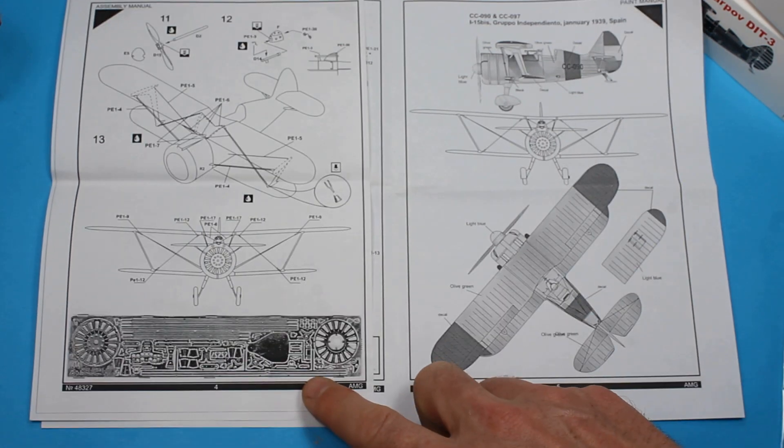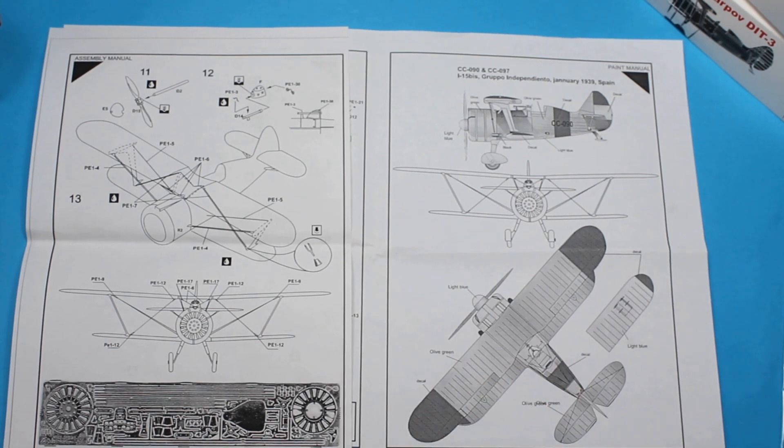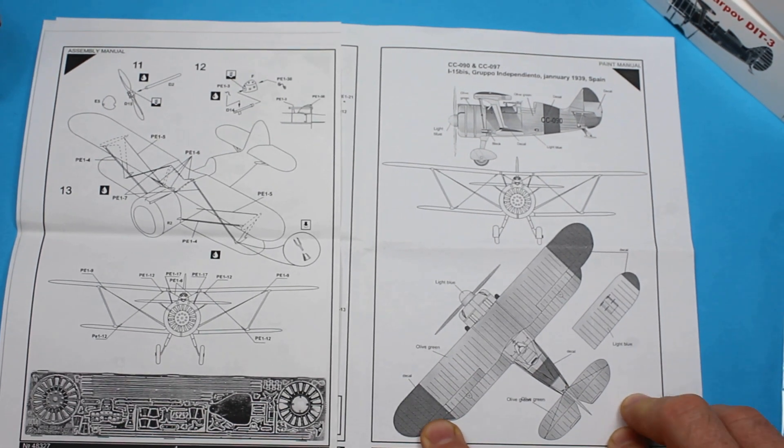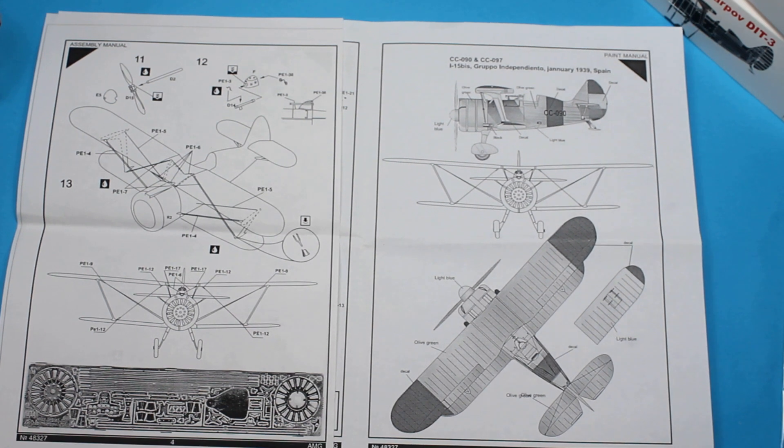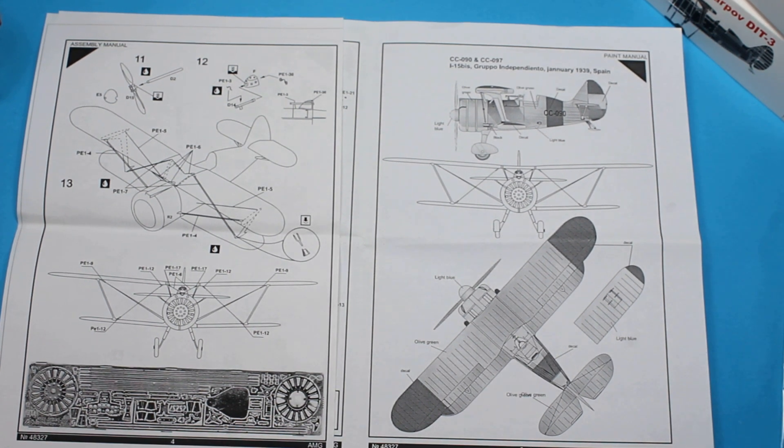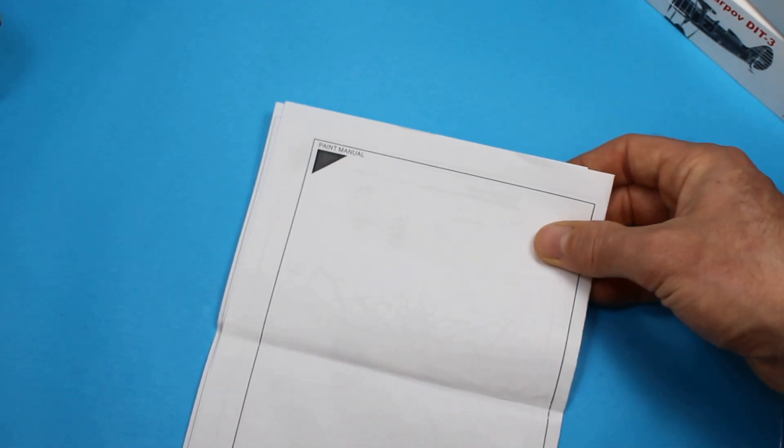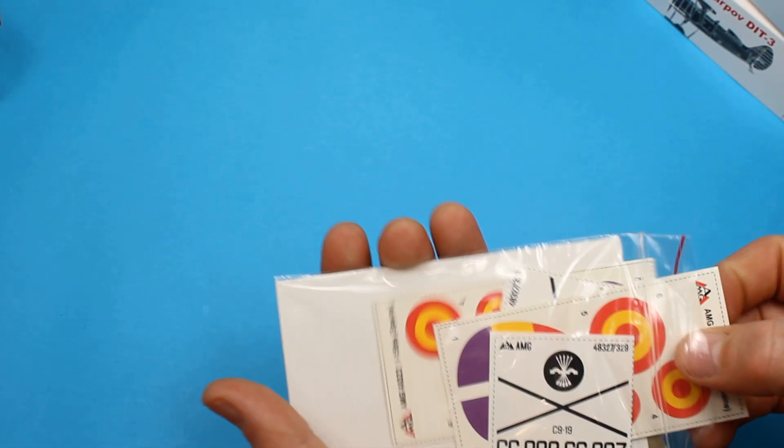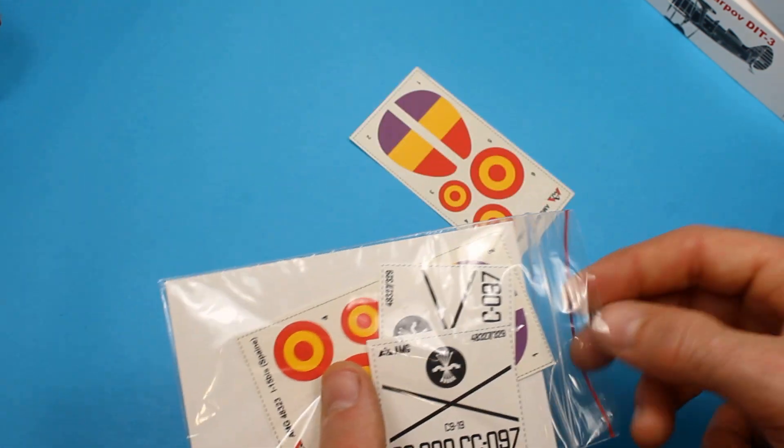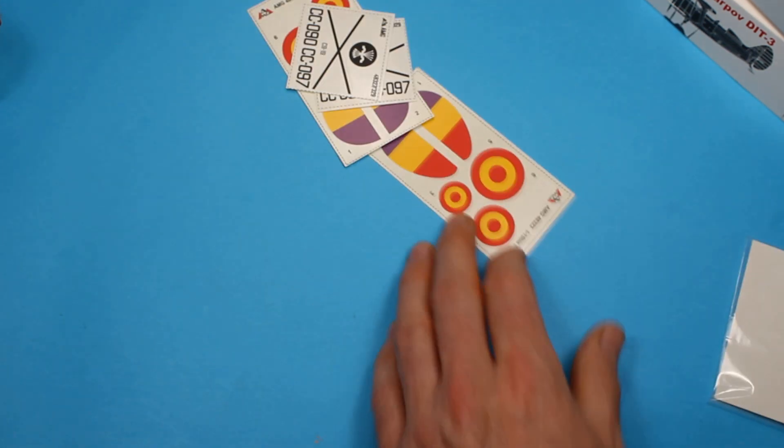Quite a crude photocopy there showing you what you actually get. We've got I-15 bis, CC090 and CC097 as part of the Grupo Independiente January 1939 Spain. So that is the sort of time they were floating about. You're going to need to do a little bit of research to track down where this was, what it did and how it fared.